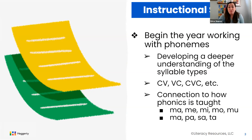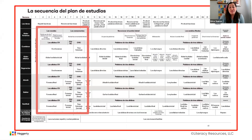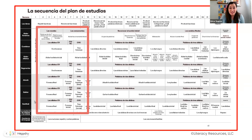Within our kindergarten scope and sequence, you will see that for those first nine weeks, students are working with those direct syllables, inverse syllables, sílabas mixtas, or CVC syllables. You're going to see that students work with blending, segmenting, and manipulating those types of syllables. This is allowing for students to develop both phonemic awareness and syllable awareness at the same time, which is a huge shift from our previous edition.